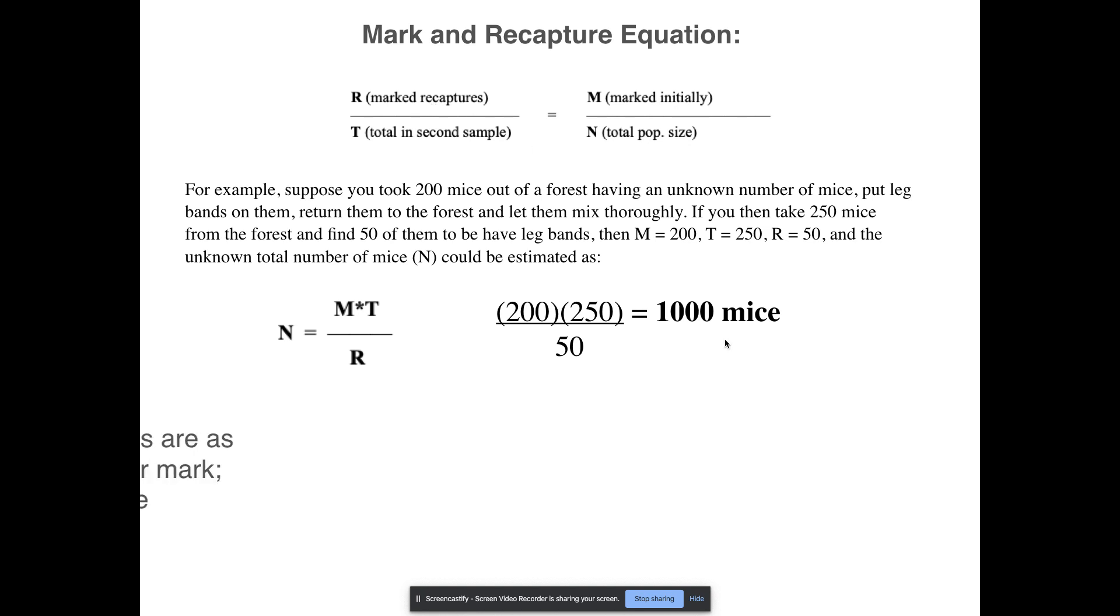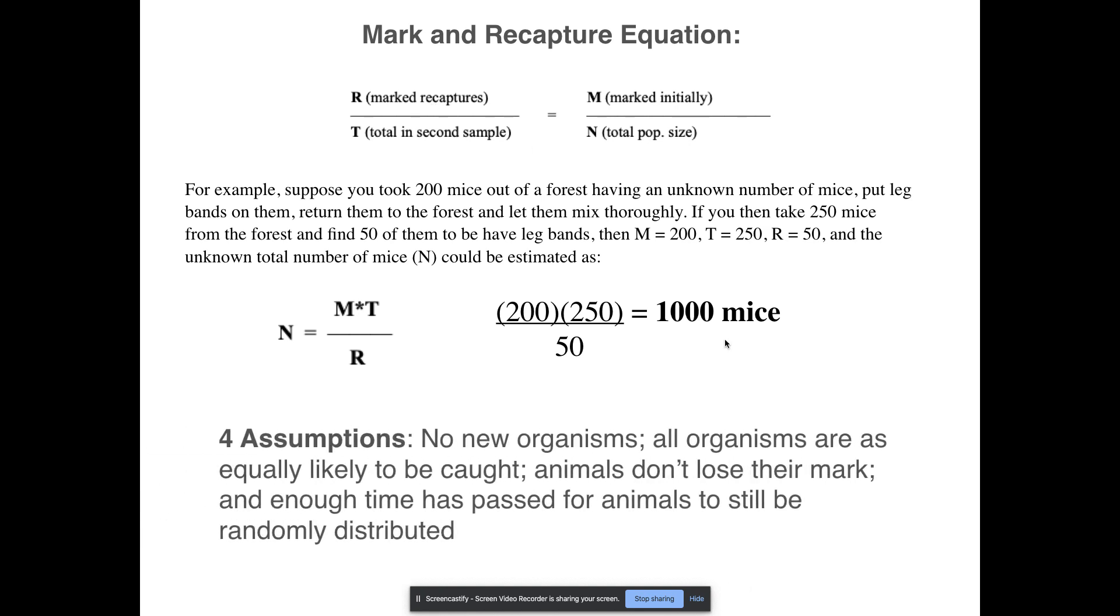Now there are tons of assumptions that we are using when we do this method. And as long as these are being followed, then we're pretty much okay. But this doesn't work for everything. The first is that there are no new organisms. In other words, there weren't new mice that came into this population. You're not giving them so long that the mice had a bunch of babies.